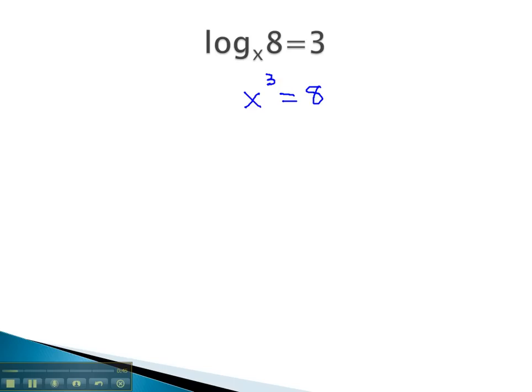This equation we've seen before and is simple to solve. The inverse of taking a third power is to take a third root on both sides. Third power and third root are inverses, and we're left with x equals the cube root of 8, which is 2.